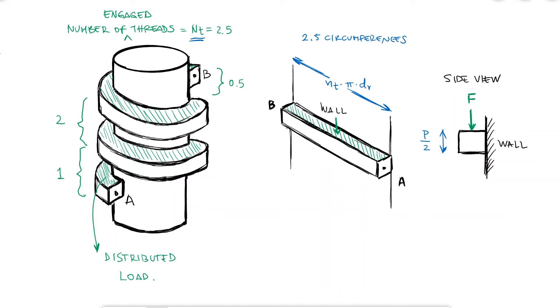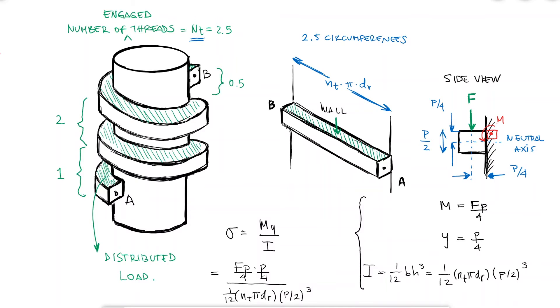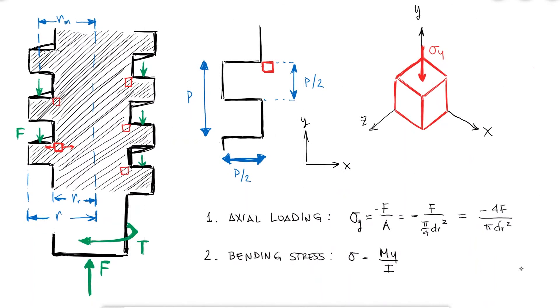The height of the cross-section area would be the pitch over 2. The moment at the critical stress location would be equal to F times the distance from F to that location, which is half of the pitch over 2, or P over 4. The variable Y, the distance from the neutral axis to the top of the thread, would also be equal to P over 4. And finally, the second moment of area I would be that of a rectangle of height P over 2 and base pi dr times nt. Going back to our normal stress equation for bending, we would obtain a positive normal stress of 6F over pi dr nt p, which would be a normal stress in the x-axis.